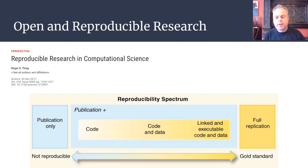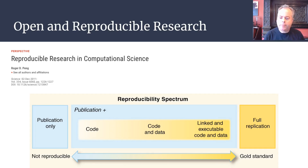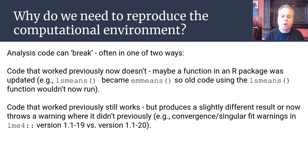This graphic from a paper by Roger Peng in 2011 really nicely captures the importance of sharing these three things. The gold standard for producing reproducible research is actually providing others with our data and our code, but in such a way that our code can be executed in the computational environment that we originally executed it in.